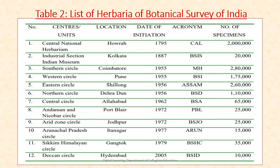Table 2 lists herbaria maintained by the Botanical Survey of India, including the center name, location, date of initiation, acronyms used, and number of specimens. Units include: National Herbarium Howrah, Industrial Section of Indian Museum Kolkata, Southern Circle Coimbatore, Western Circle Pune, Eastern Circle Shillong, Northern Circle Dehradun, Central Circle Allahabad, Andaman and Nicobar Port Blair, Arid Zone Jodhpur, Arunachal Pradesh Circle Itanagar, Sikkim Himalayan Circle Gangtok, and Deccan Circle Hyderabad.